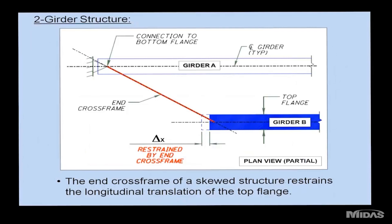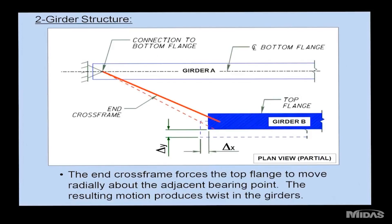In plan view, as the girder decambers, the top flange tries to deflect longitudinally relative to the bottom flange. The bottom flange of girder A is restrained at the fixed bearing and cannot move. The top flange of girder B must move longitudinally but, being restrained by the cross-frame, cannot move straight — it has to move radially about the bearing point of girder A, getting pulled over as it moves forward. Through this action, end cross-frames cause twist independently of the intermediate cross-frames.